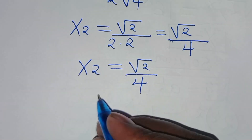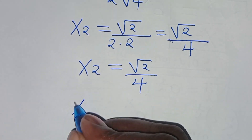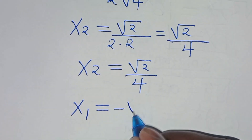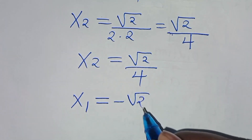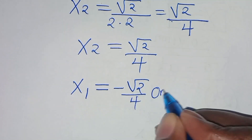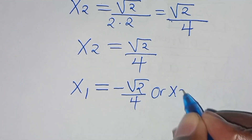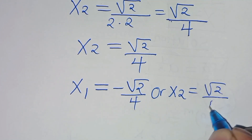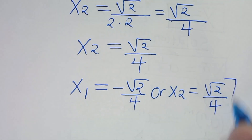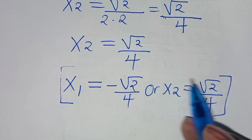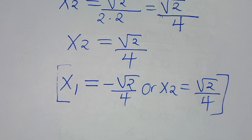Therefore the solutions are: x₁ equals negative √2 over 4, or x₂ equals √2 over 4. These are the solutions to this math problem.